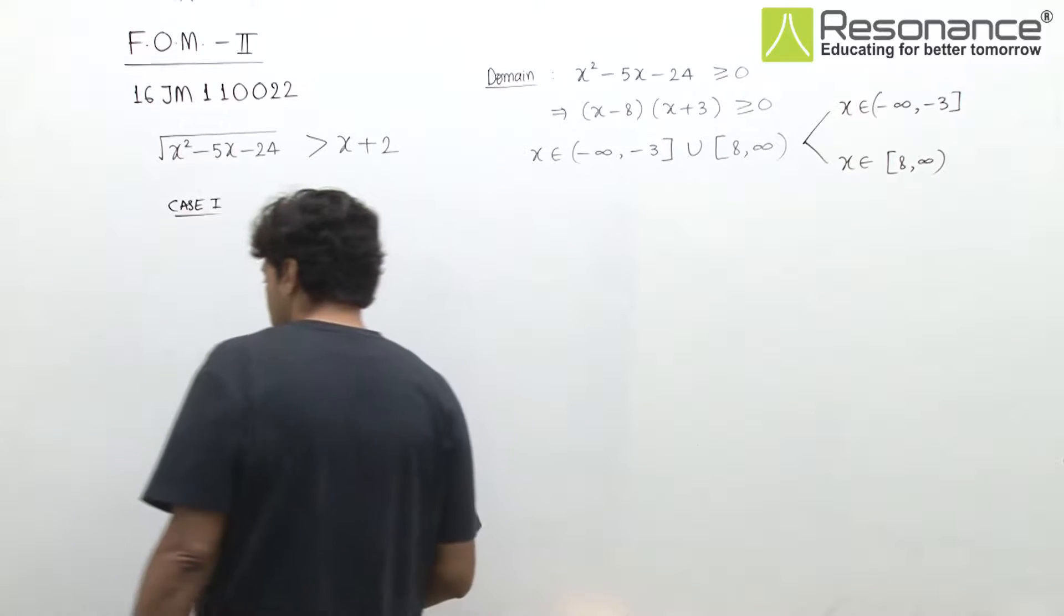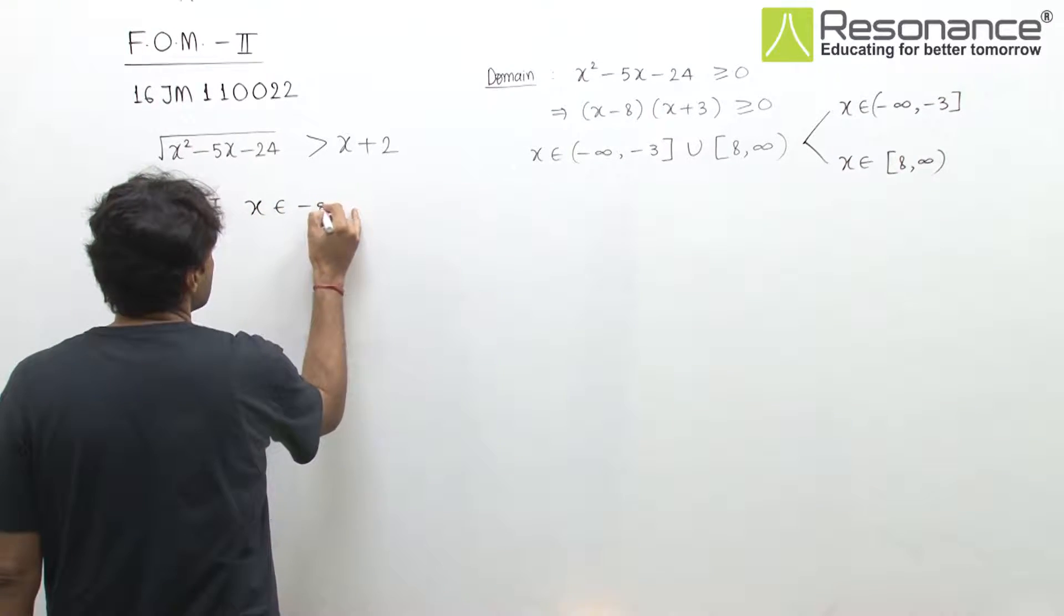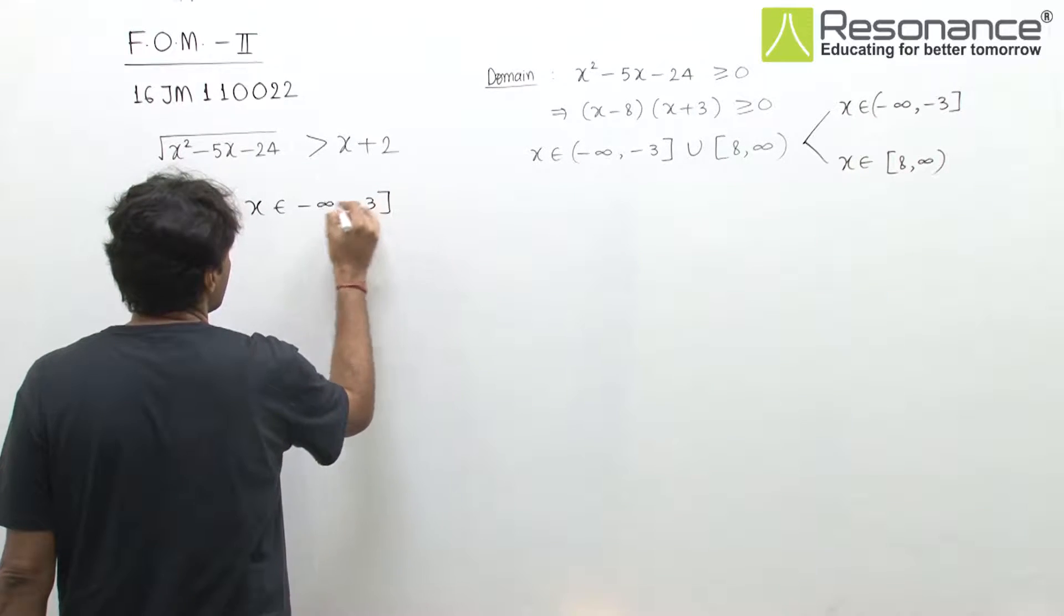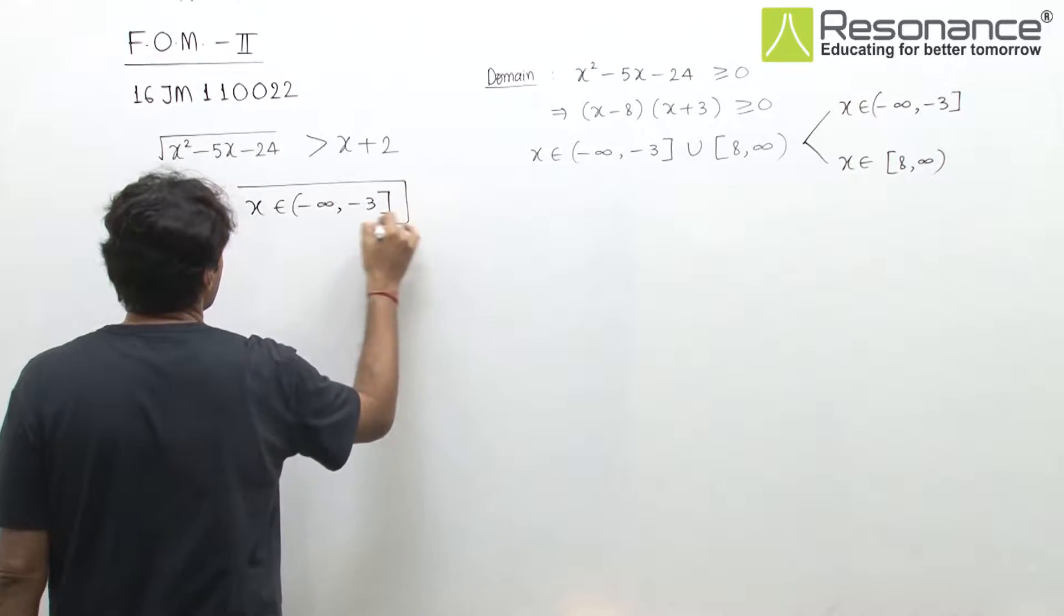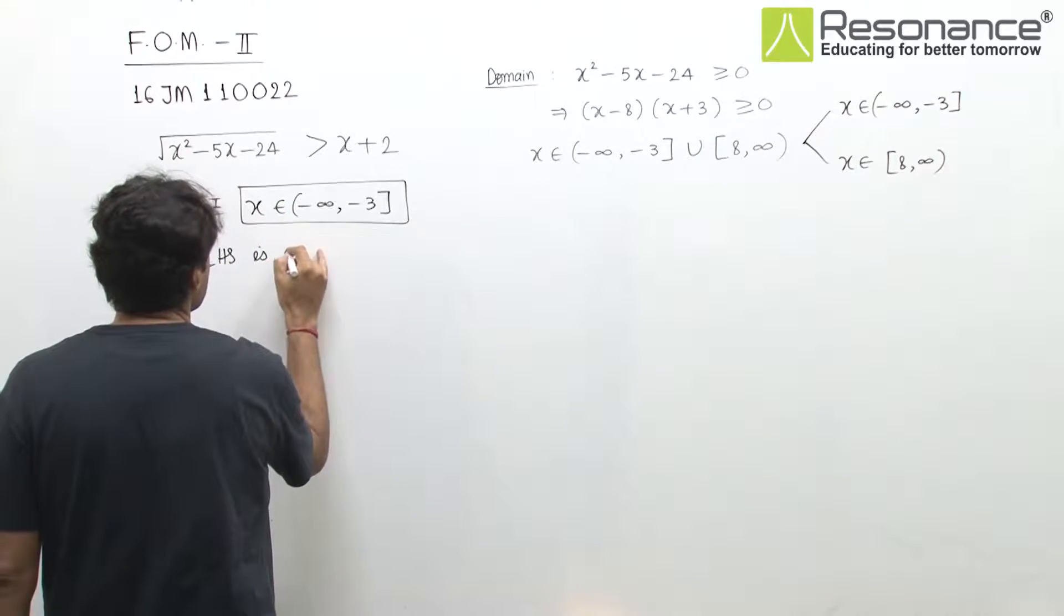In the first case we won't square, we'll use direct observation. First case: x belongs to (-∞, -3]. In that case, LHS is non-negative.